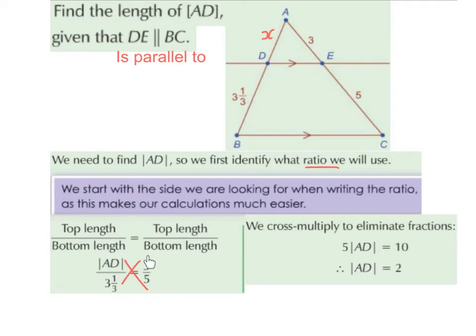Be careful with inputting this into the calculator. If you write 3 with a third stuck onto it, it's going to get a third of 3, which would be 1, and then multiply that by 3, which gives you 3 — not 10. The answer is 10. So what you need to do in the calculator is input (3 + ⅓) with brackets around it, multiplied by 3. Or you could say 3 + ⅓ gives you an improper fraction of 10 over 3, and 10 over 3 multiplied by 3 gives you 10. Just be careful with how you input this on the calculator.